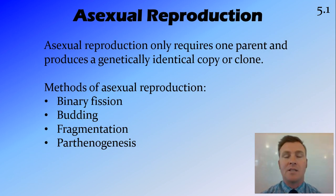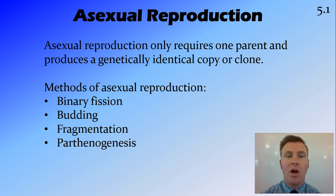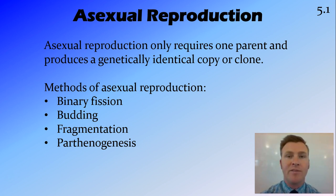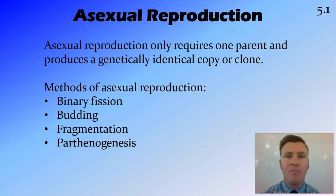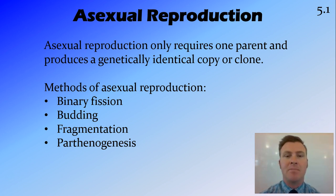Firstly, we'll look at asexual reproduction. Asexual reproduction occurs when one parent reproduces to form an offspring, and that offspring is an identical copy or clone, so they have the exact same DNA as the parent.